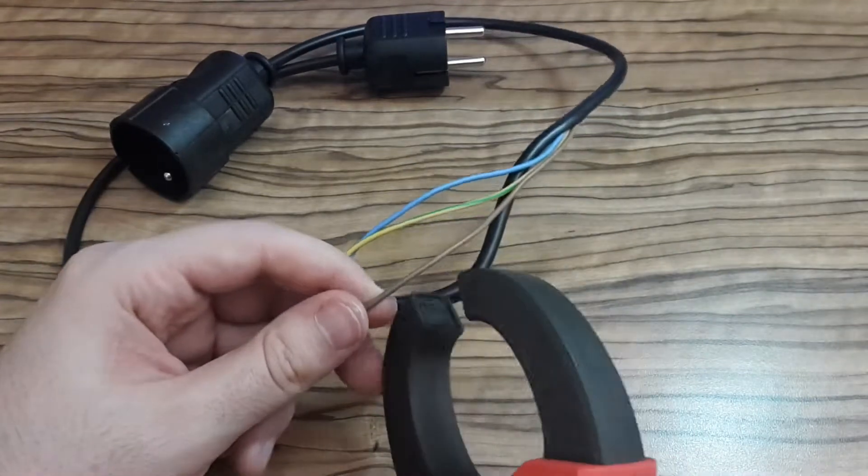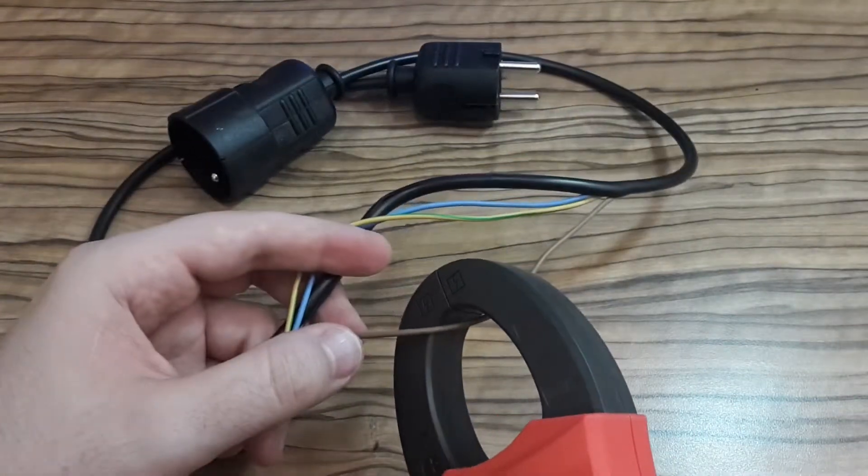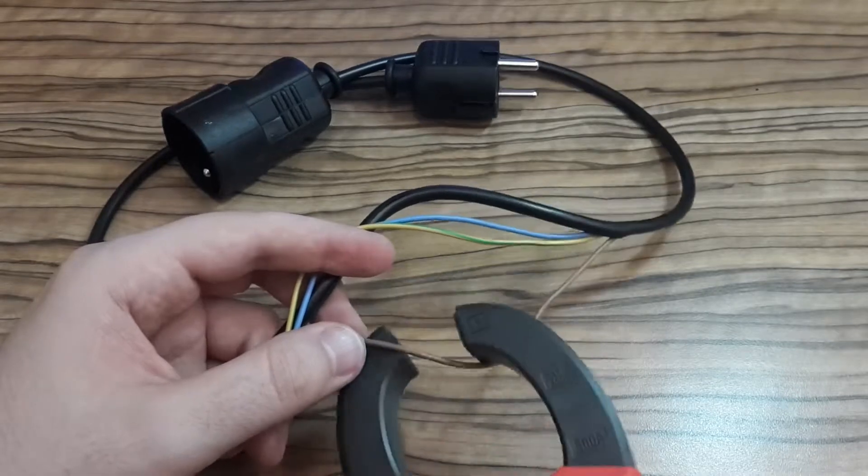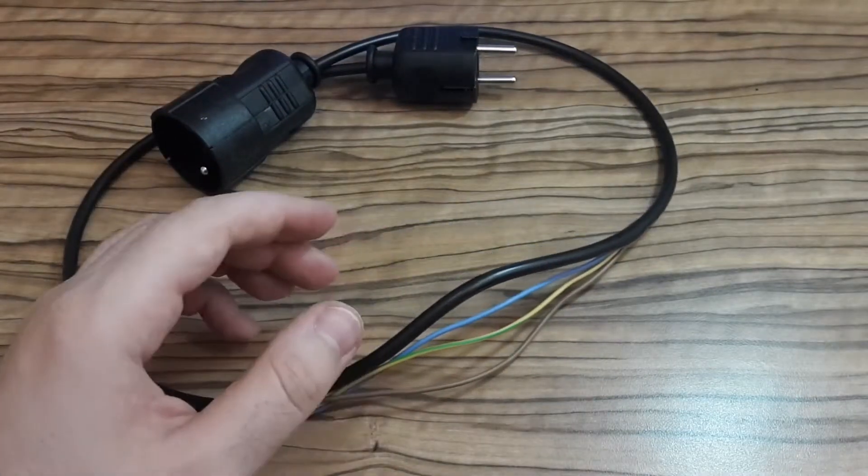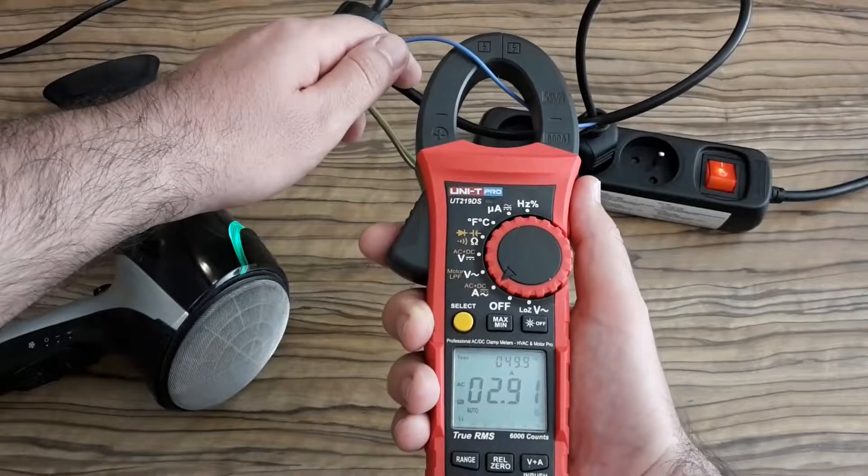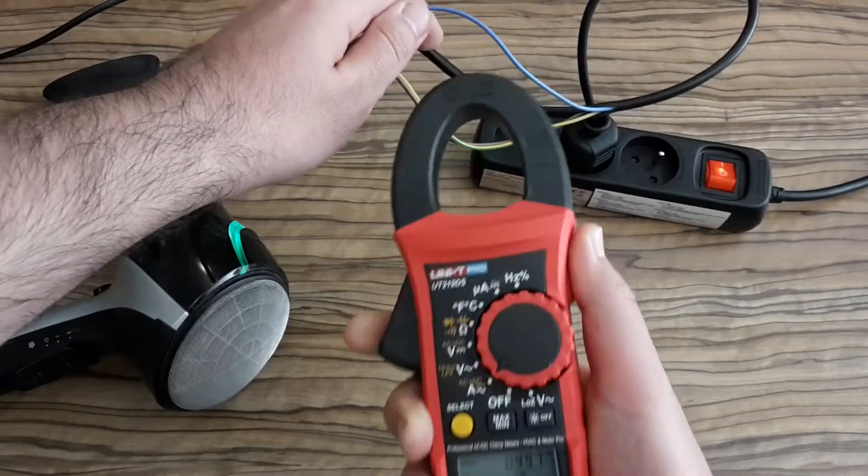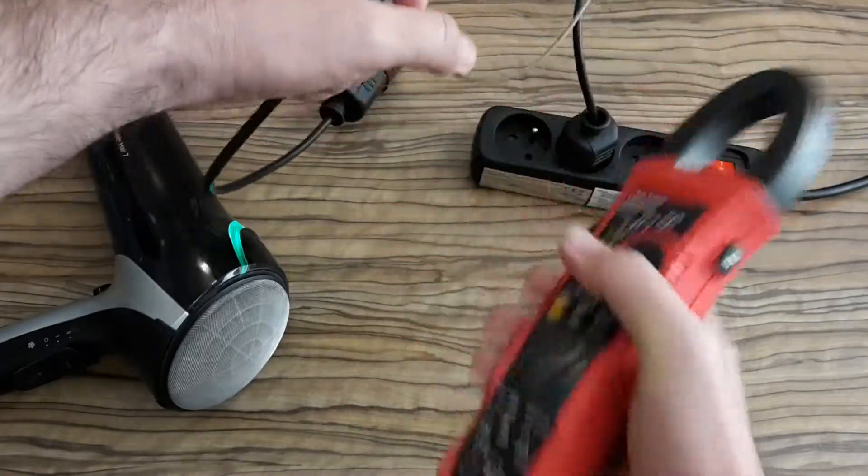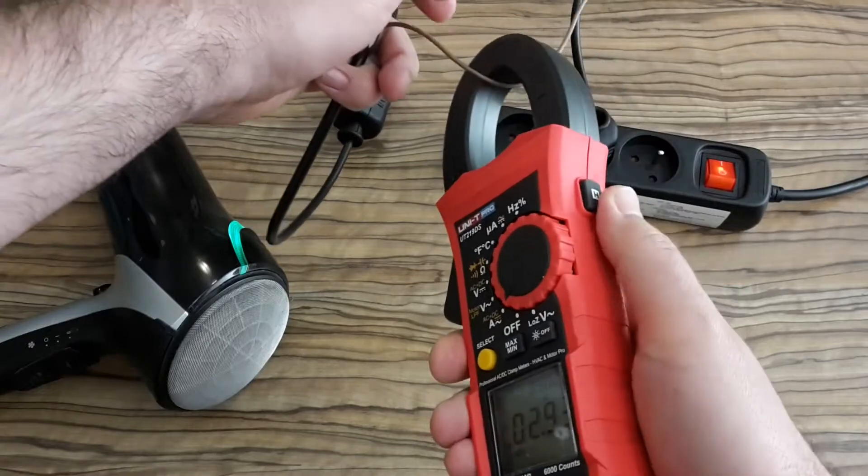And I'm going to use this way. Now I'm measuring the current with my new line splitter. And you can see how much current my hair dryer draws.